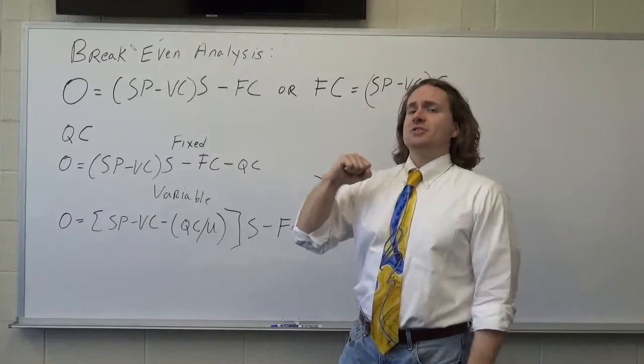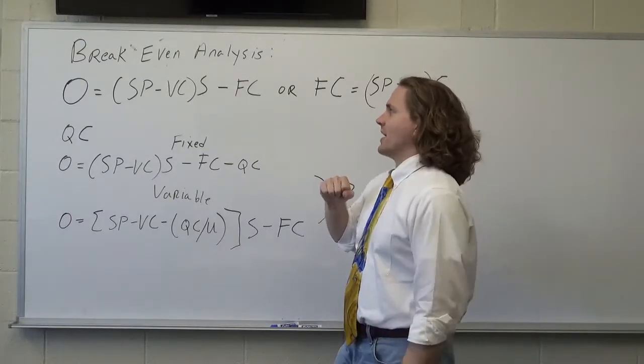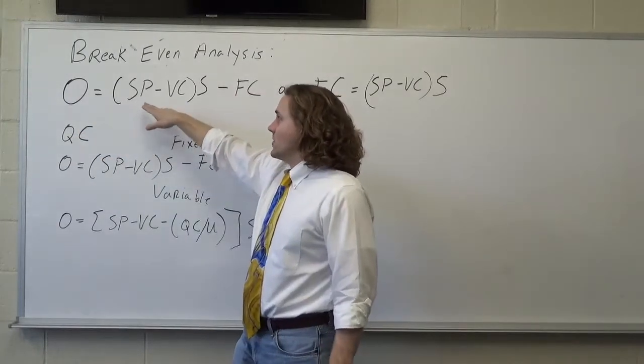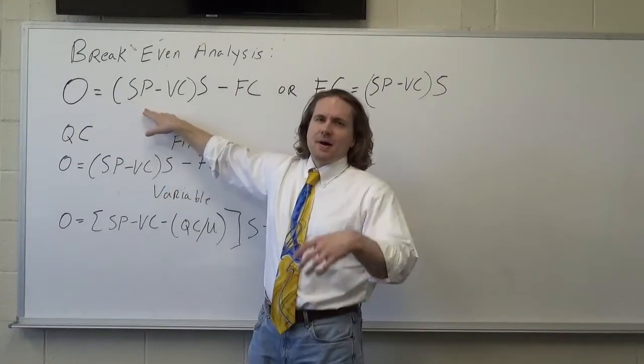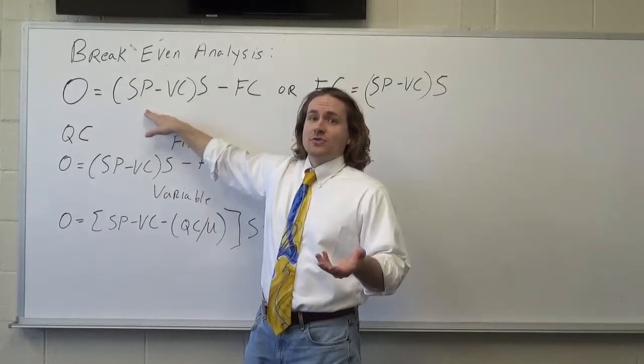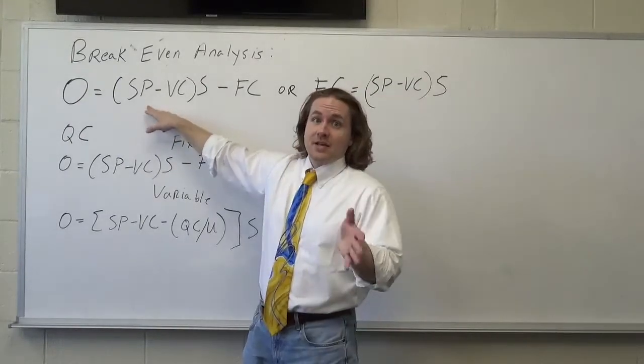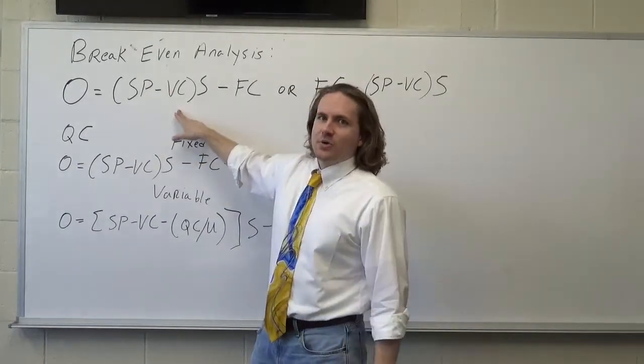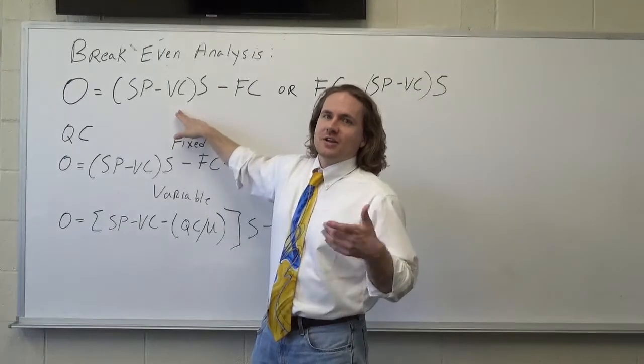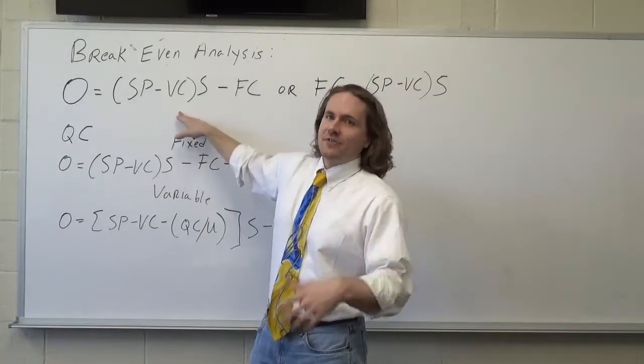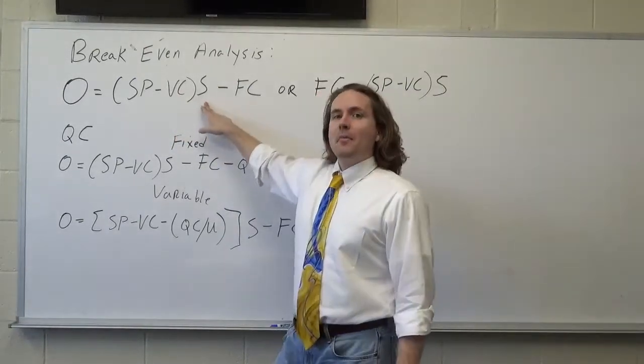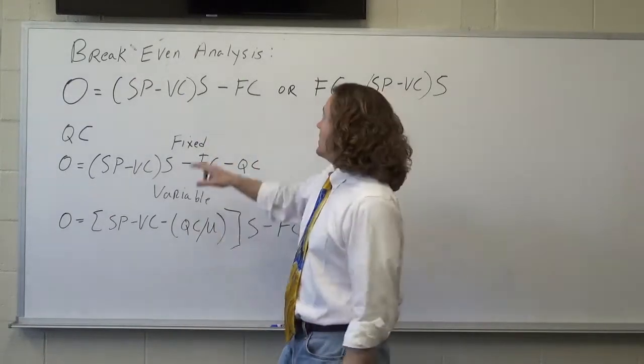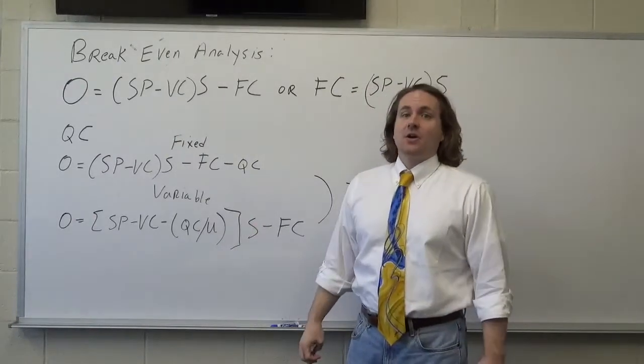So let's look at a couple of equations that will help you with the breakeven analysis. So the first one, you're going to have zero is equal to the selling price. Again, think about sweaters. Let's say I make sweaters and I sell those sweaters for $100. So you put in, I'm selling it for $100 and $100 is a sweater minus the variable cost, i.e. how much does it cost to make the sweater? Let's say it costs $75 to make the sweater, times the number of units you're going to sell, like I'm going to sell 50 sweaters minus the fixed cost.